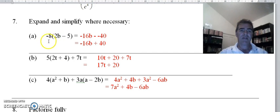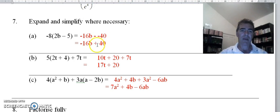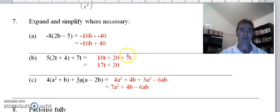Moving on to question 7, a proper expand question. This negative 8 is multiplying both terms inside: negative 8 times 2b is negative 16b, take away negative 8 times 5 which is negative 40. Two negatives make a plus, so we get negative 16b plus 40. The next one: 5 lots of 2t is 10t, 5 lots of 4 is 20, with a plus sign in between, and then we've got our 7t tacked on the end.